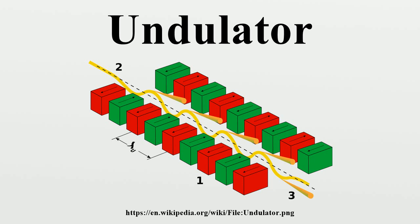Undulators can provide several orders of magnitude higher flux than a simple bending magnet and as such are in high demand at synchrotron radiation facilities. For an undulator with N periods, the brightness can be up to N squared more than a bending magnet.